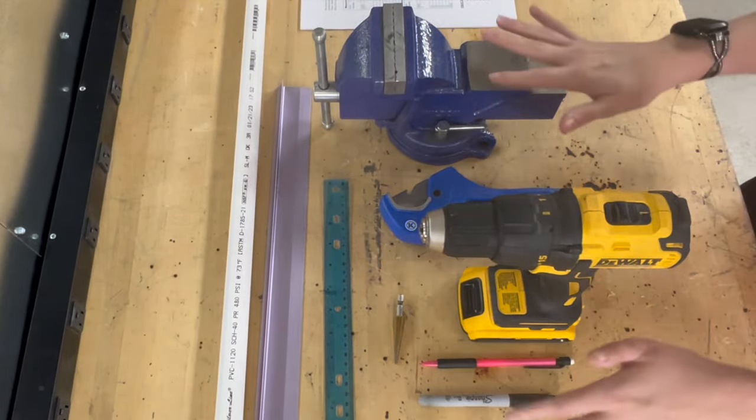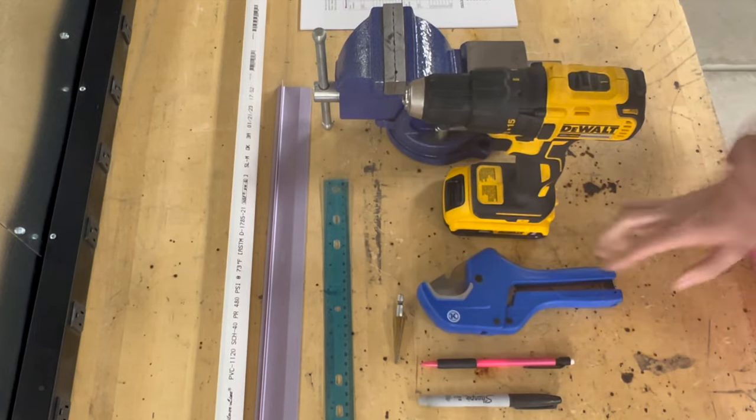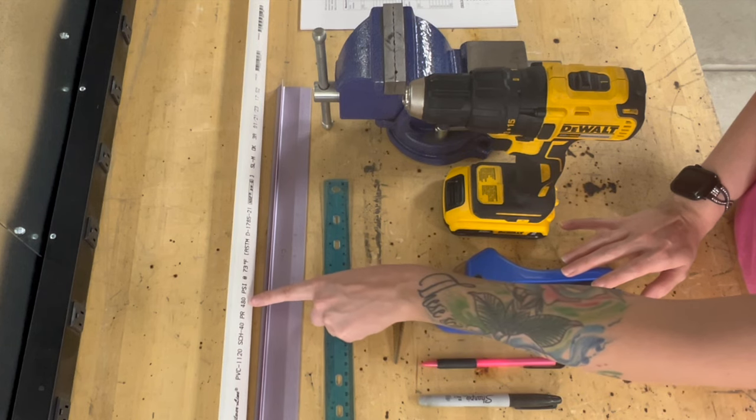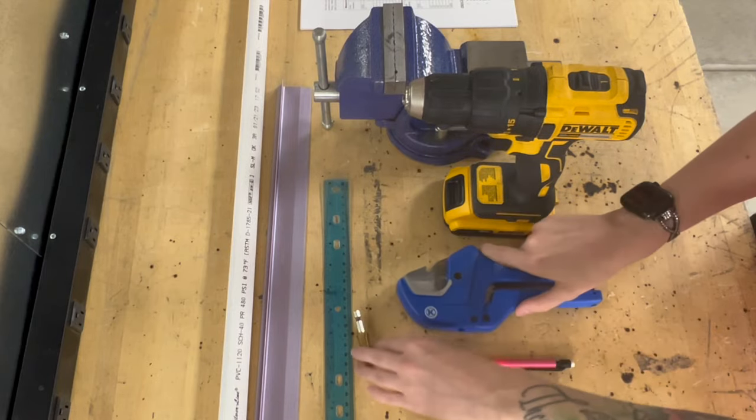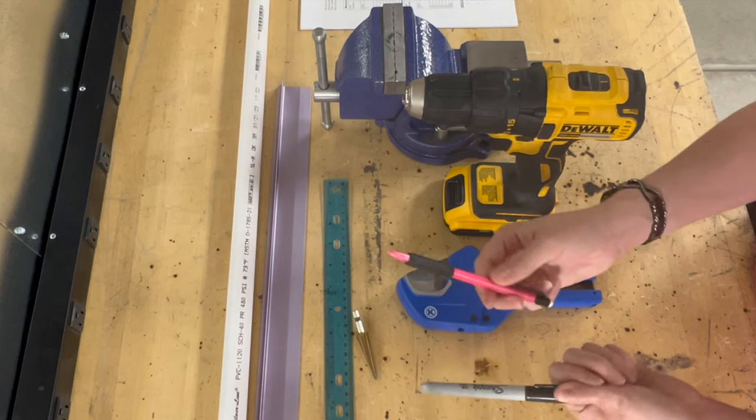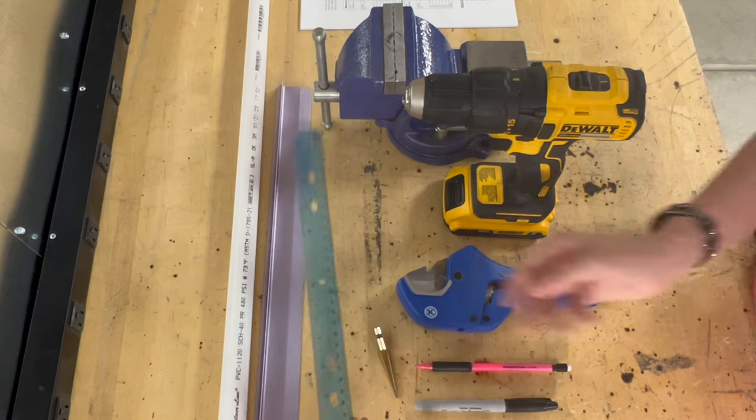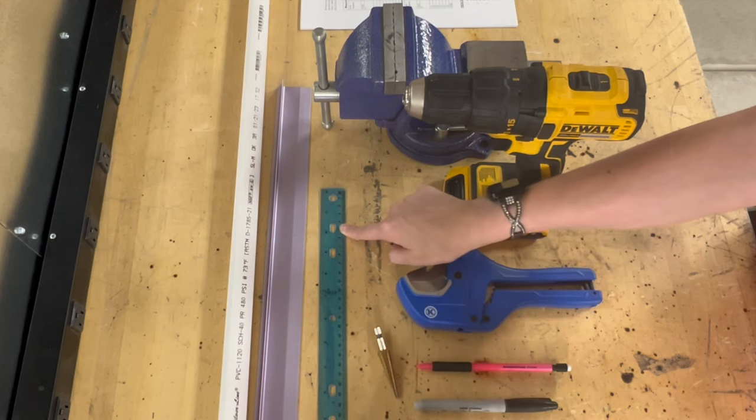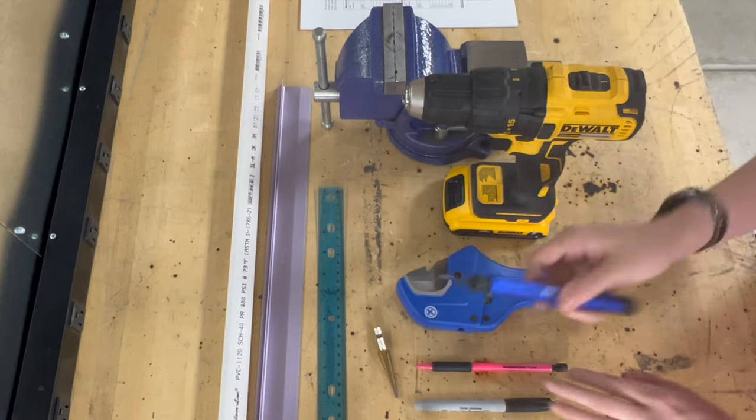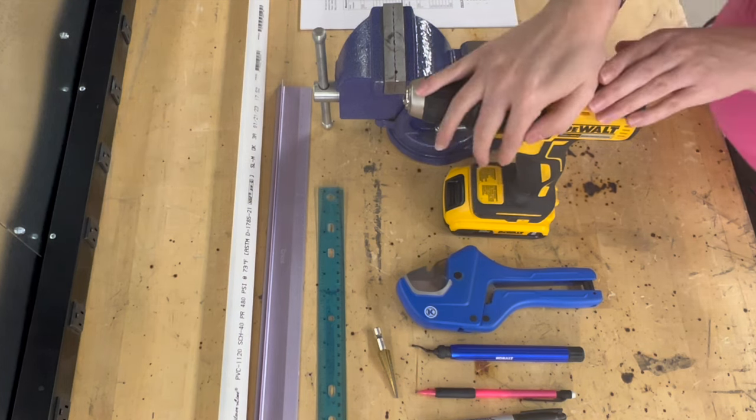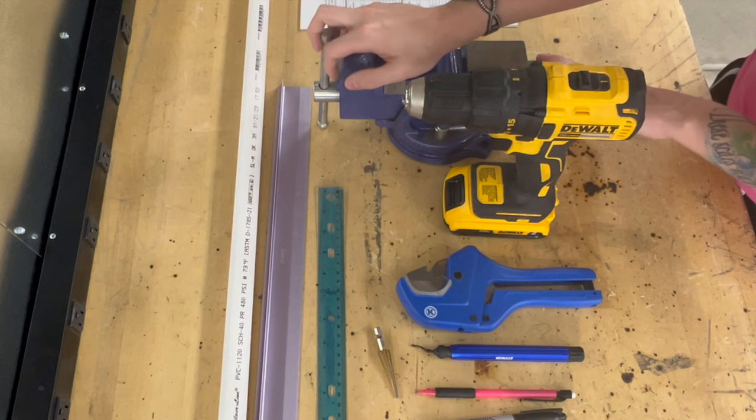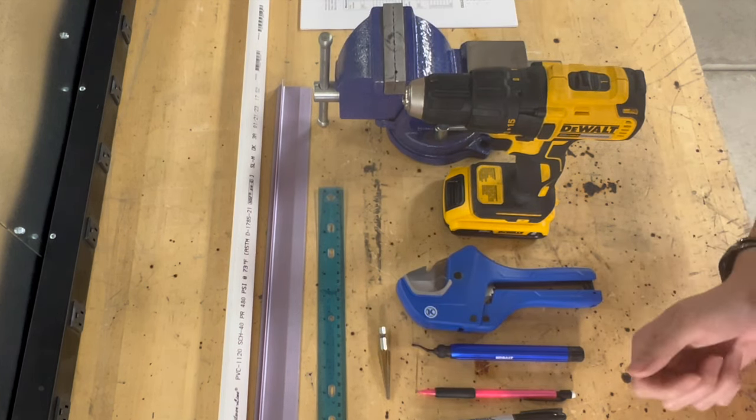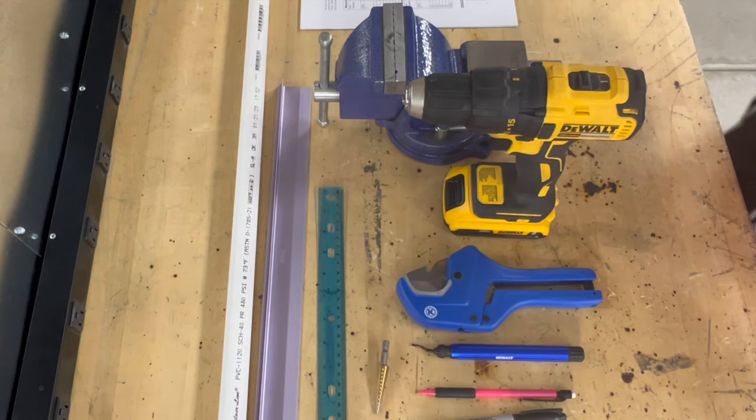I have everything that we need set up right here. We're going to need our three-quarter inch 480 PSI pipe, our cutter, different marking tools like a Sharpie and pencil, my step bit, my ruler - two different kinds of rulers including an 18-inch ruler and a 12-inch with centimeters. I also have my deburr tool, the drill, and our vise. The vise is kind of optional; I just found that it was a little bit easier. Same with the step bit - I found this was a lot easier to use instead of drilling with six different kinds of drill bits.